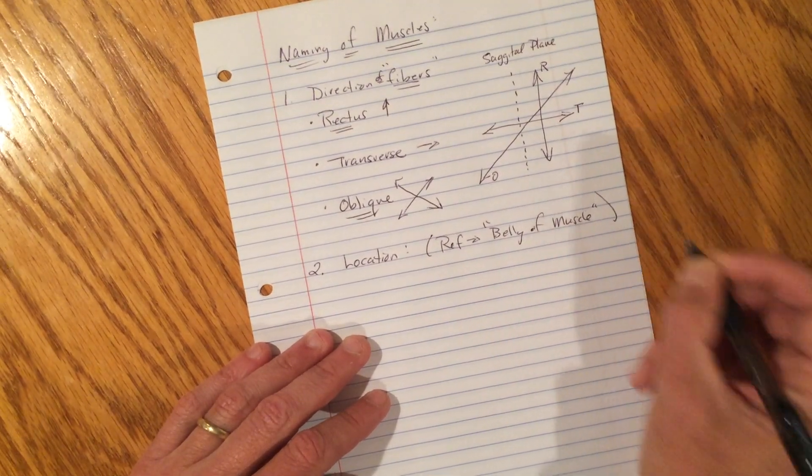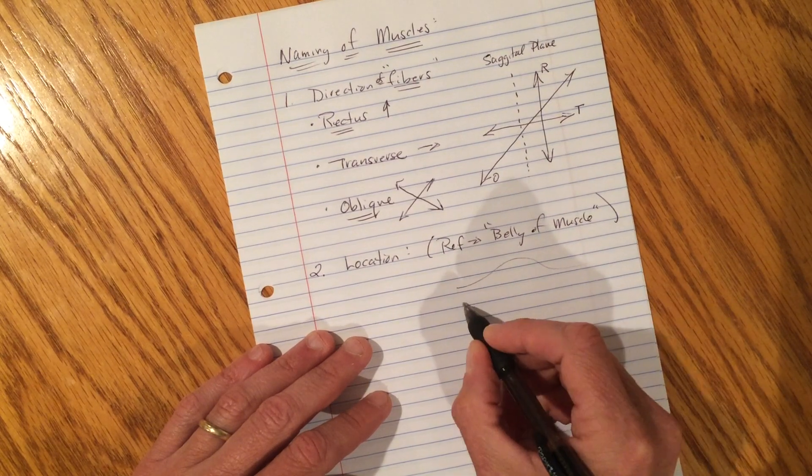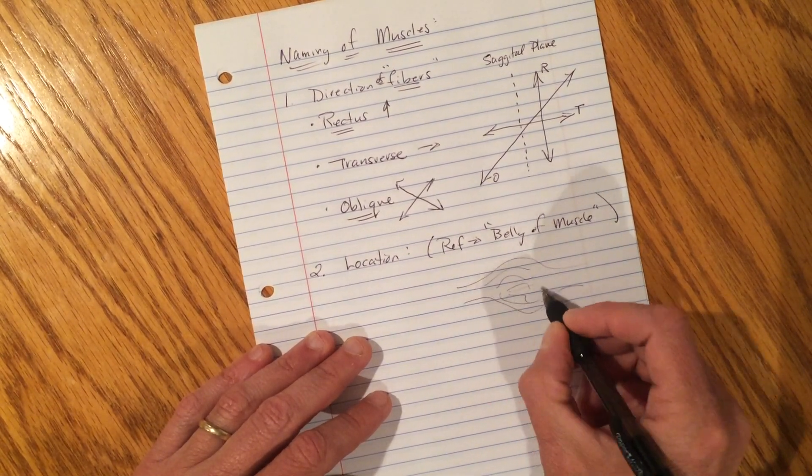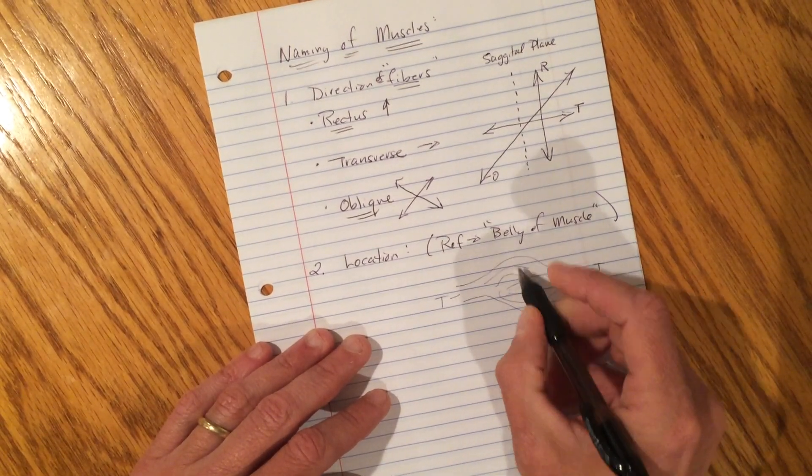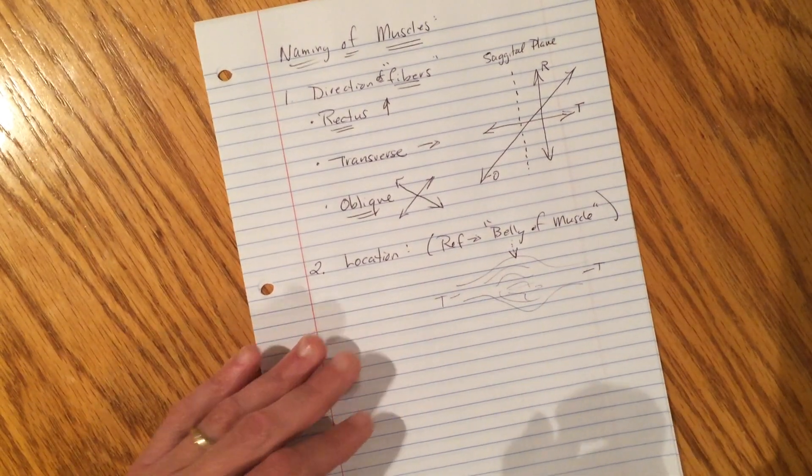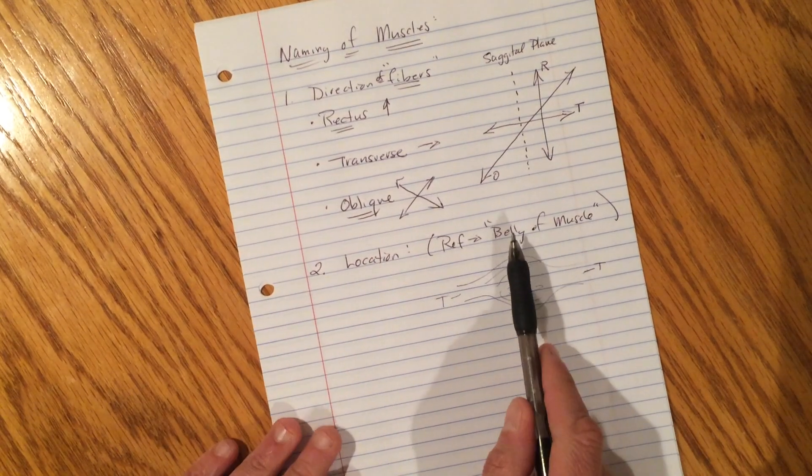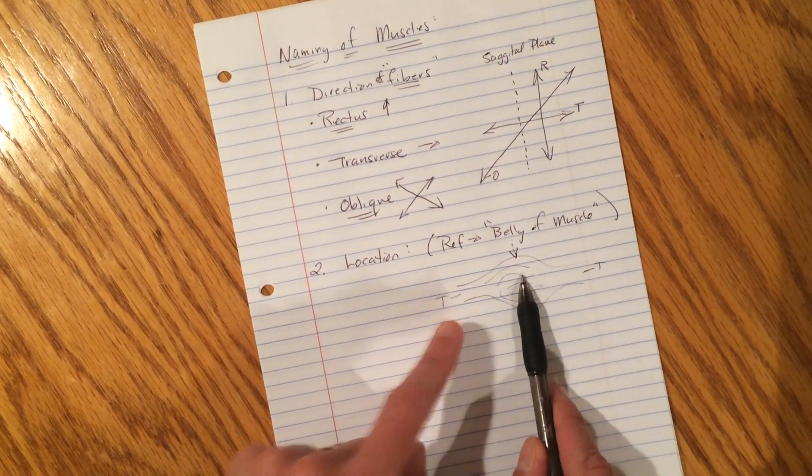Does anybody remember what that was? If you had this expanded thing right here, you know, and that was the muscle like that. We had a tendon on each end. And then the muscle expands in the center. What's that center part called? Oh, let me guess. The belly. So anytime a muscle is named for location, the reference point is where the belly of the muscle is lying, not the ends, the dead center of it.